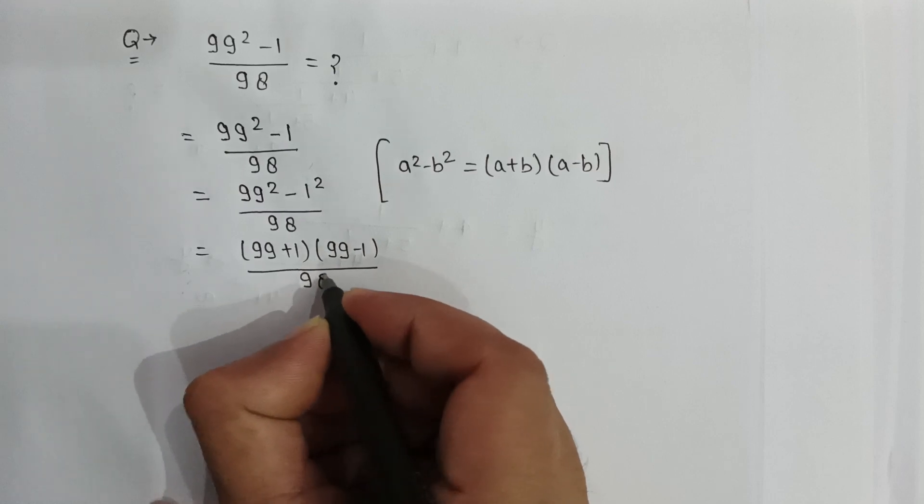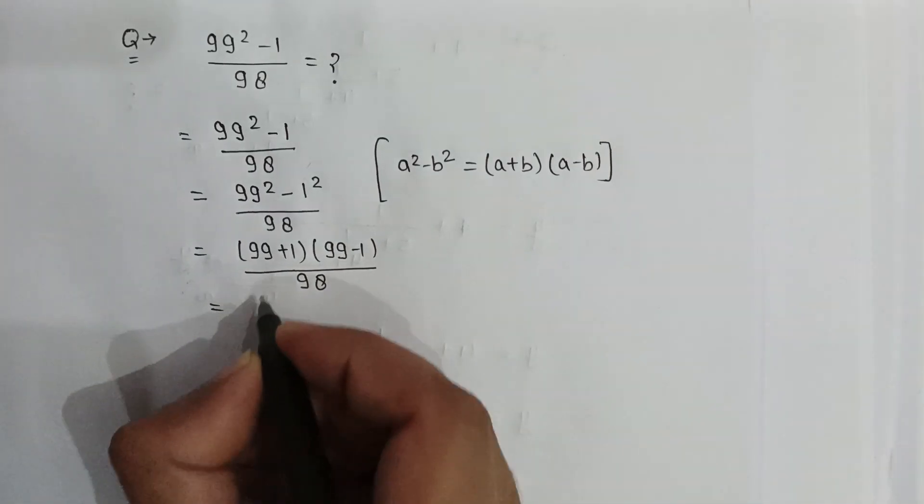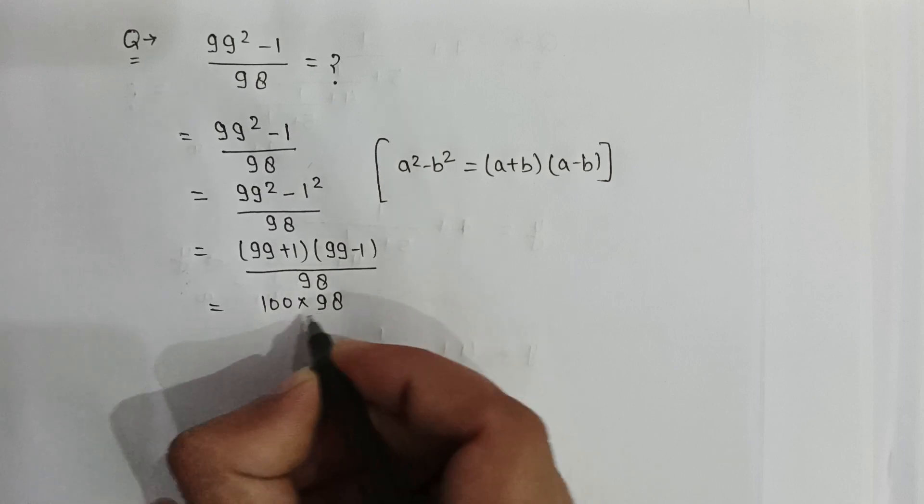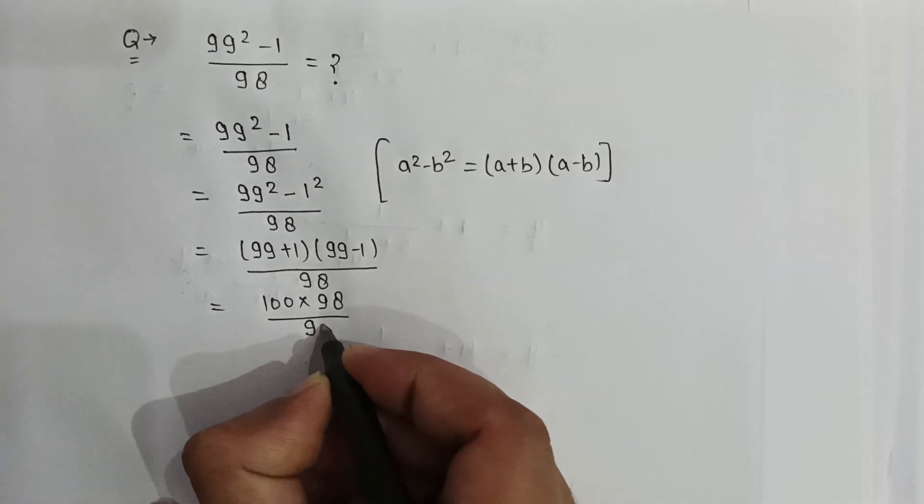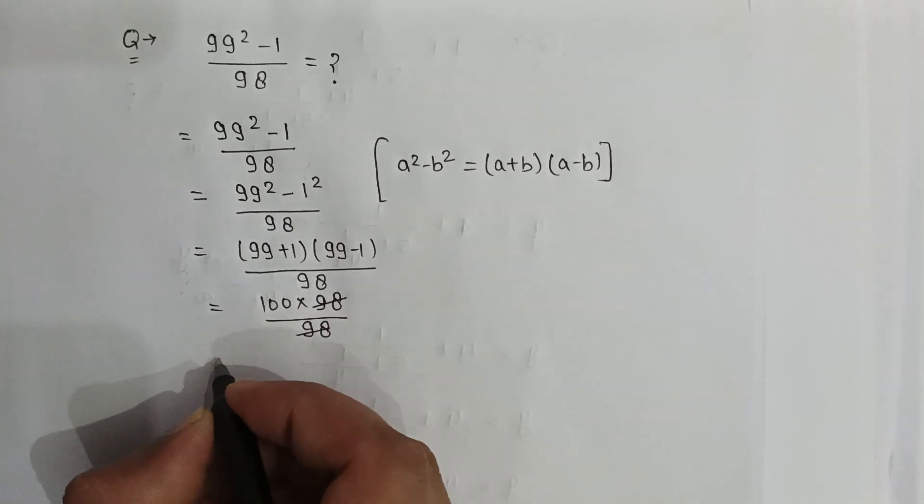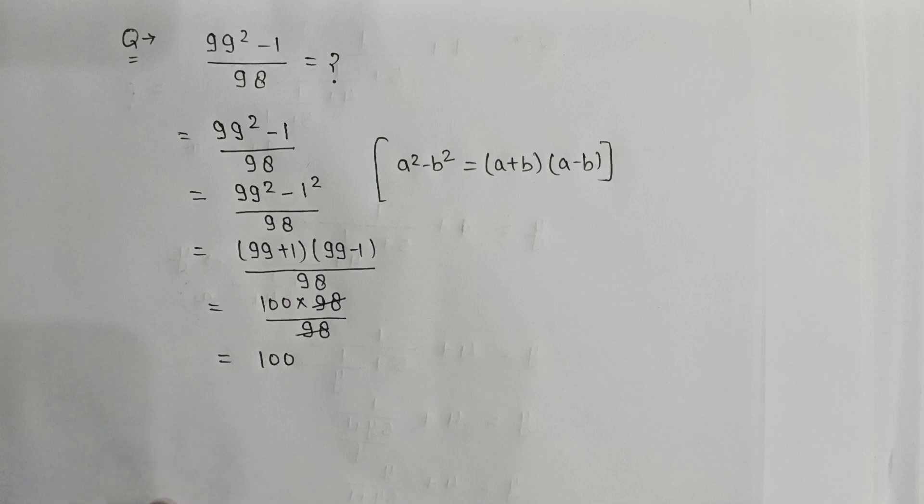So here it will be 100 multiply by 98 over 98. 98 will be cancelled out with 98, so it will be 100. This is our answer. Thank you, friends.